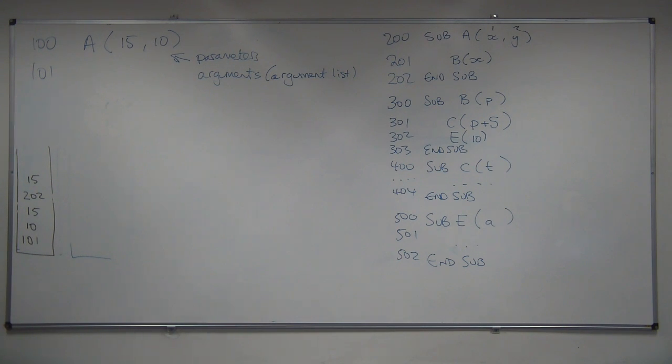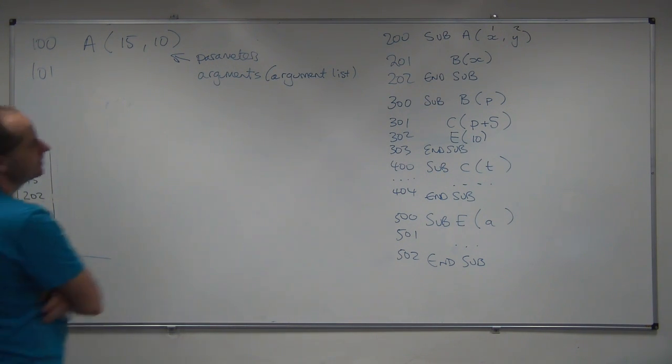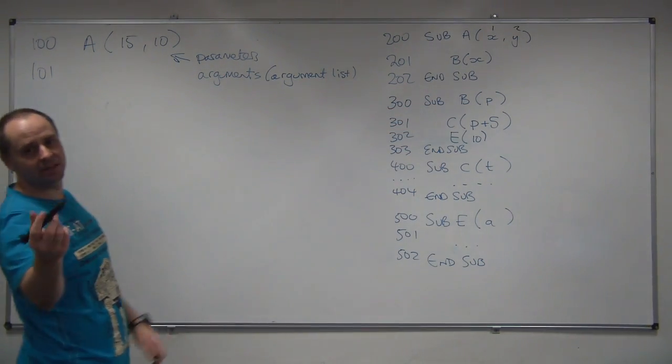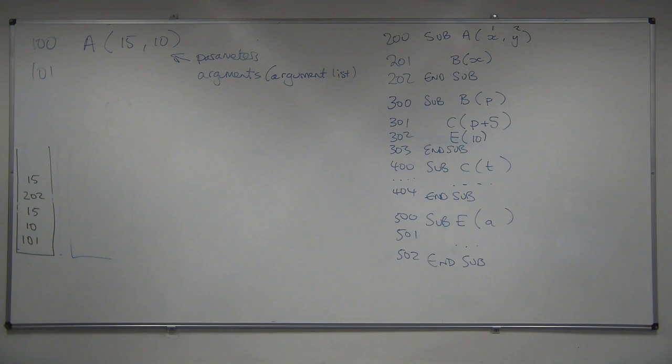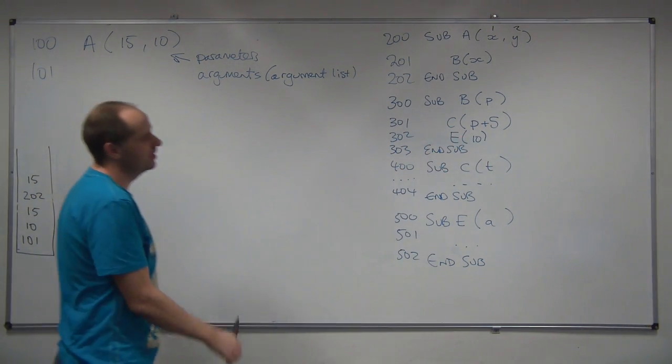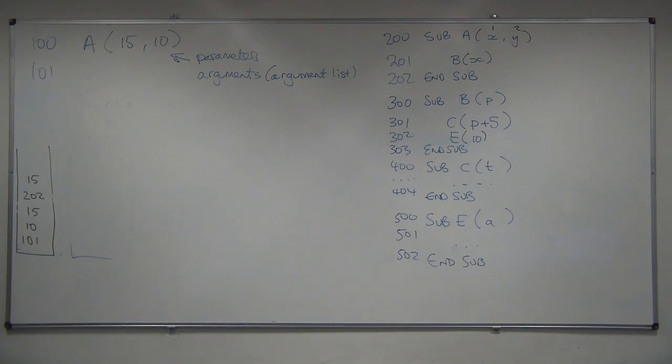Then, we can go off and run the subroutine B. Notice how all we're doing is we're building the stack up in this first part. So, B at 300, parameter has been called P by the programmer of that subroutine. And, we're going to run or call the function C with the value P plus 5. P is a value 1 down from the top of the stack. So, it's that one. We're going to add 5 to it. So, we're going to get 20.